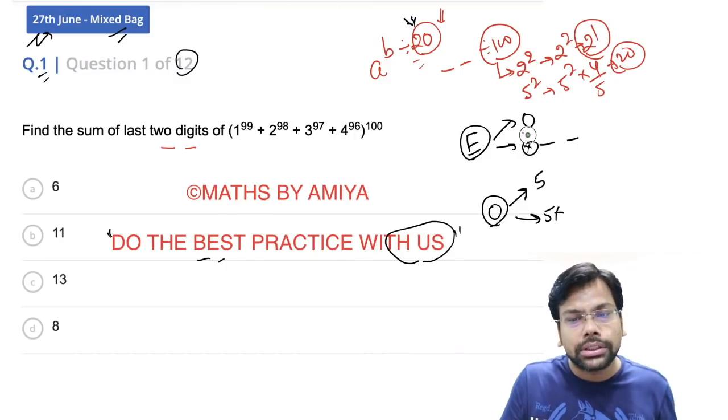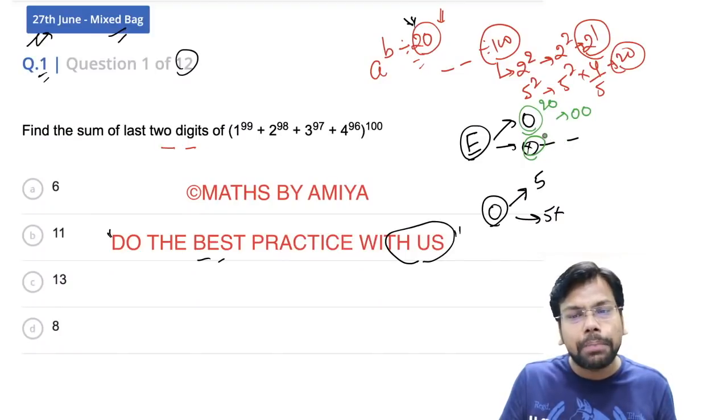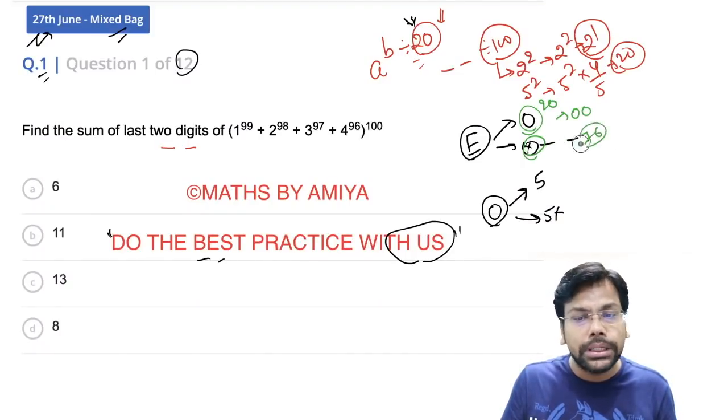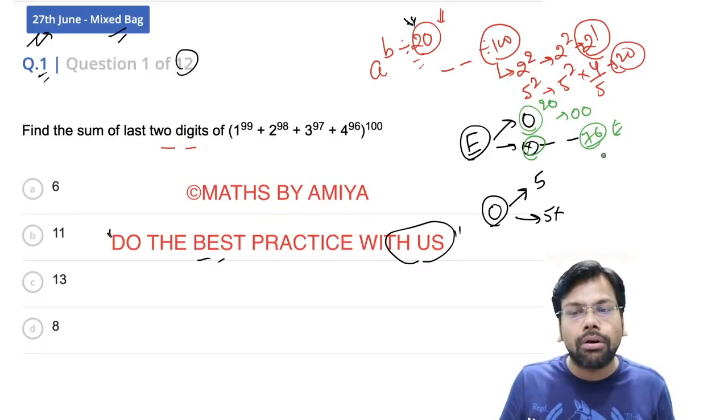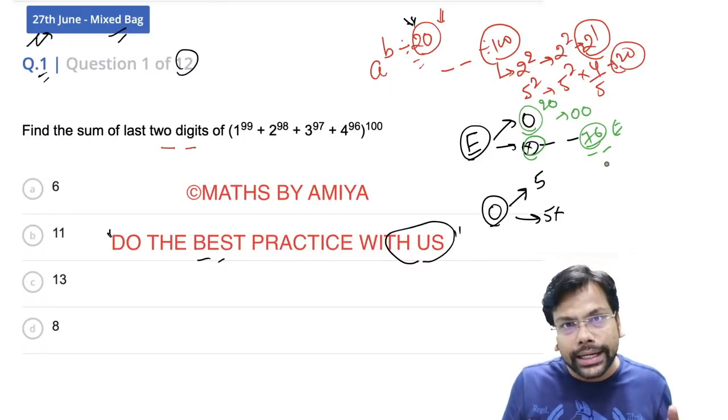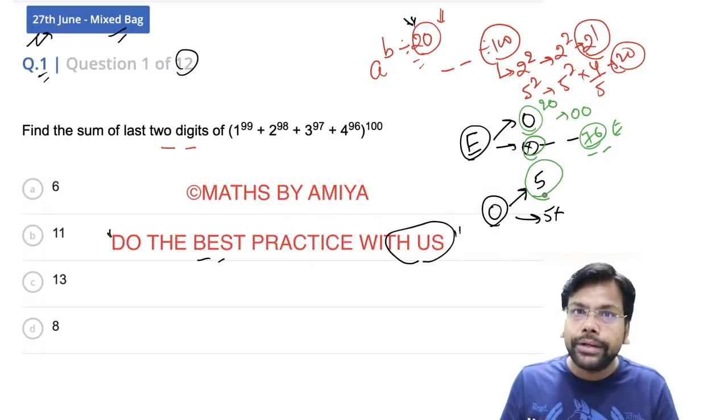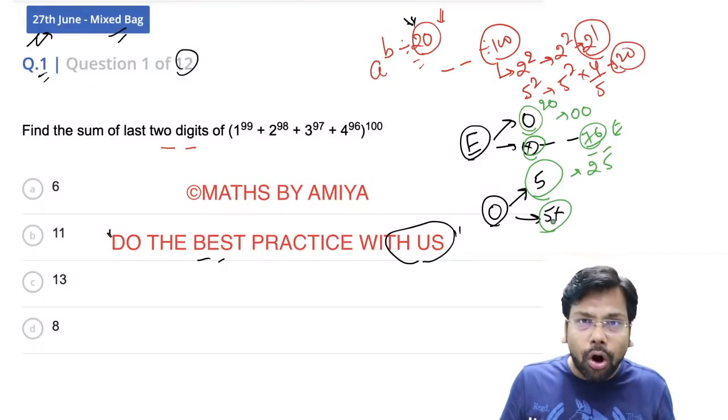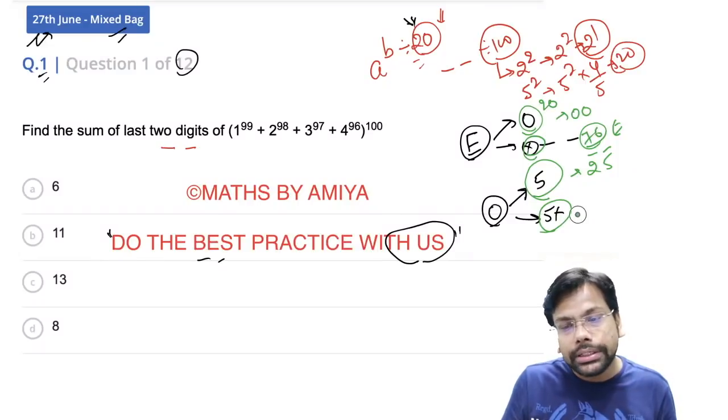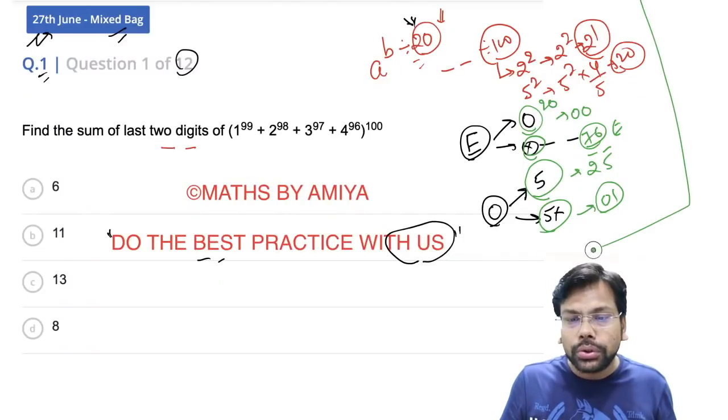So if any number ending with 0 raised to power 20 would give 00 as the last two digits. If not ending with 0 and the power is a multiple of 20, it ends with 76. Number ending with 5, power 20, the last two digits would be 25. Number is odd not ending with 5 always ends with 01 if the power is 20 or 20 multiple.